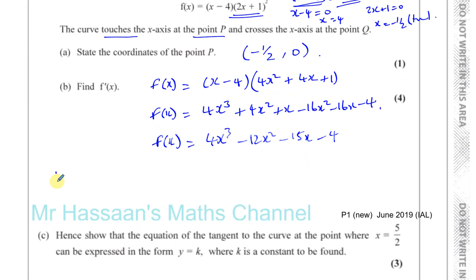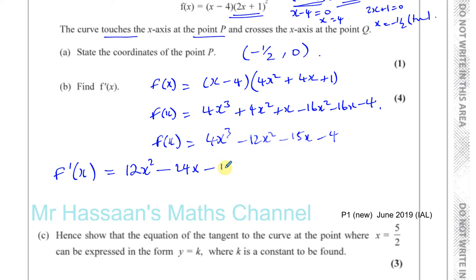We have to find the differential f dash of x, which is the gradient function. Multiply the power and take 1 from the power: 4x cubed becomes 12x squared, minus 12x squared becomes minus 24x, minus 15x becomes minus 15. Remember, minus 15x is x to the power of 1, so multiply by the power to get minus 15. The constant minus 4 disappears because any constant becomes 0 when you differentiate. So f dash of x equals 12x squared minus 24x minus 15.